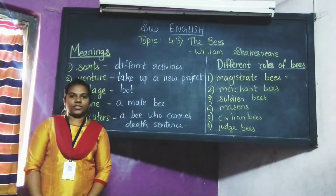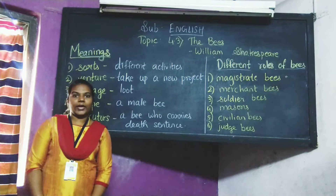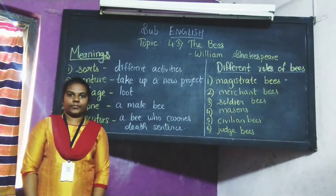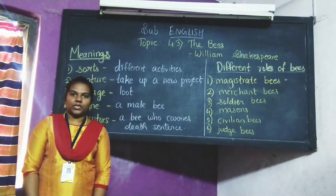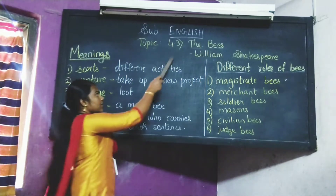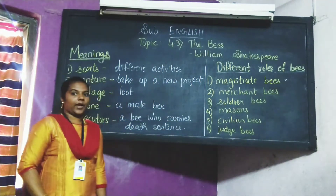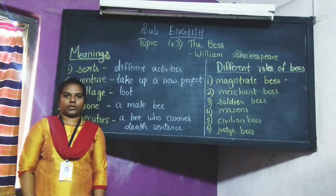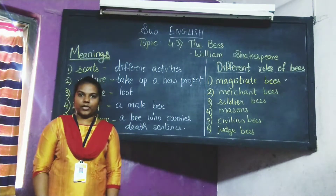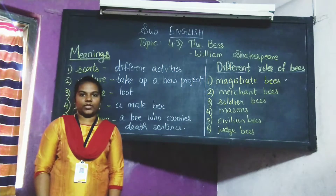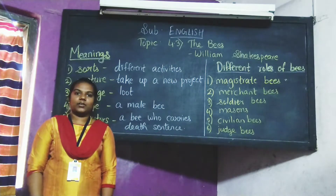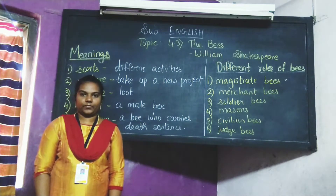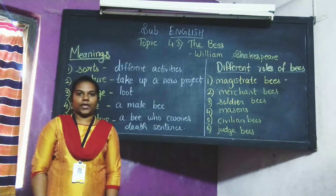Good afternoon, my dear students of Standard A. I hope that you all are fit and fine, safe and healthy. Welcome to this online class. I am teacher John C., and I am going to teach one poem of English, that is 4.3 The Wings, written by William Shakespeare. William Shakespeare was a renowned poet, playwright, and actor, born in 1564. He is known as the English National Poet, and his poems are very popular to this day.